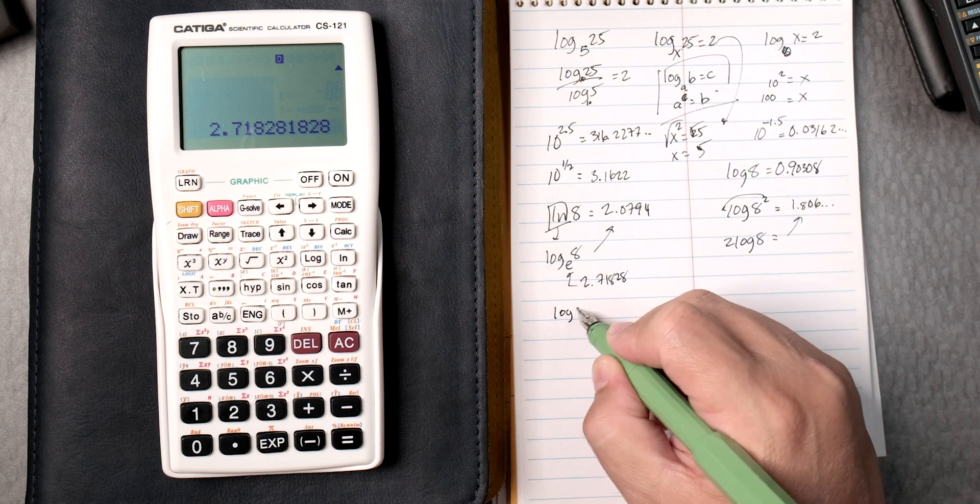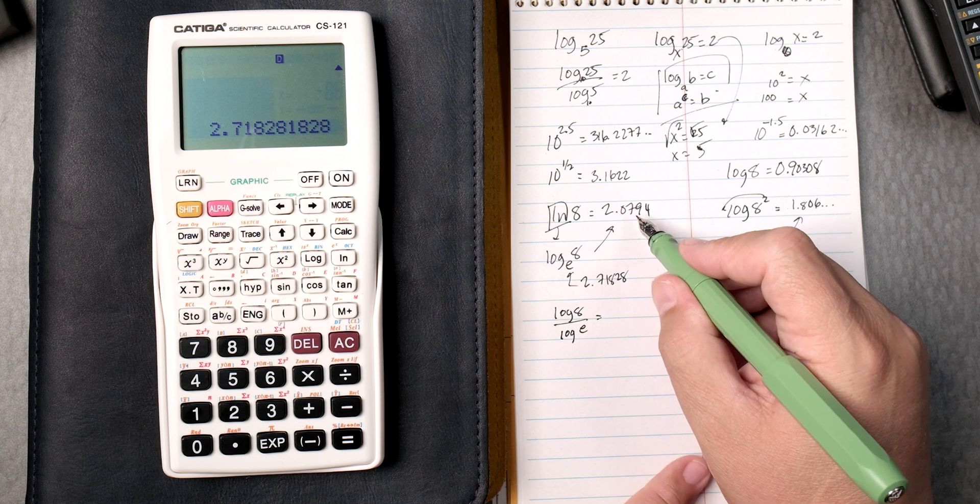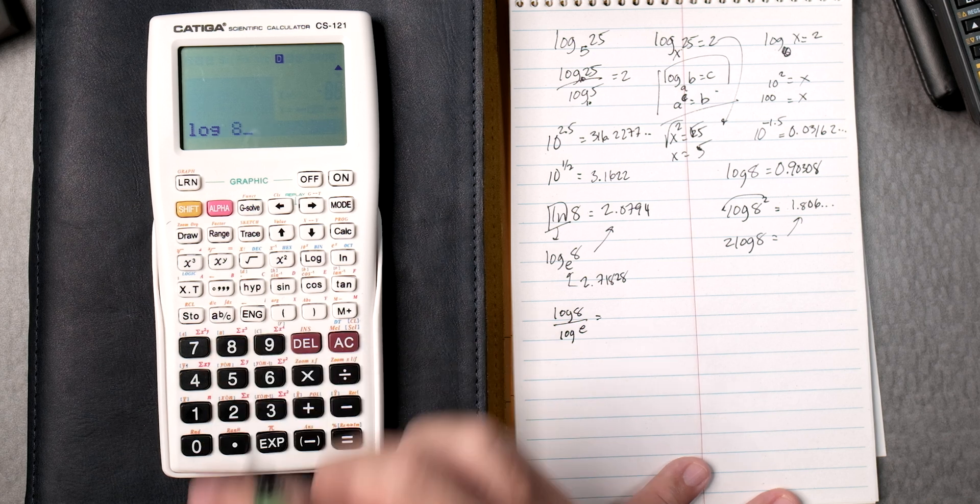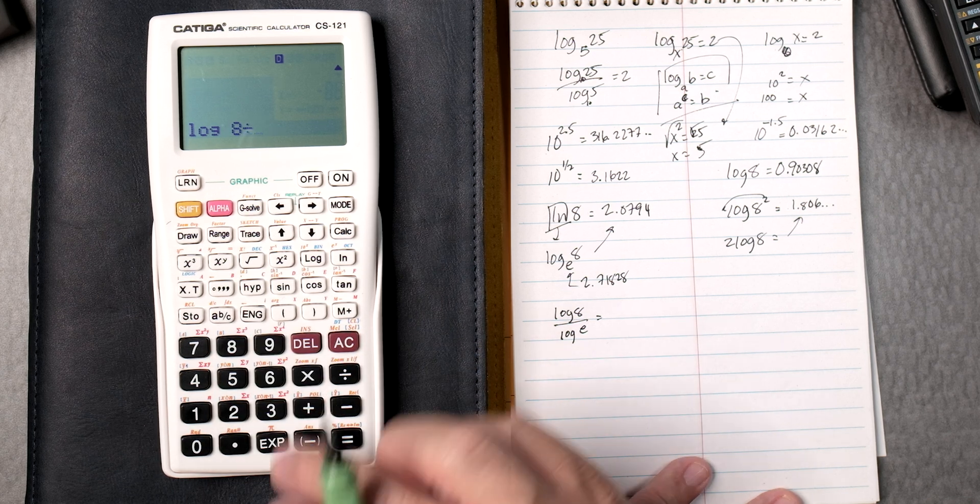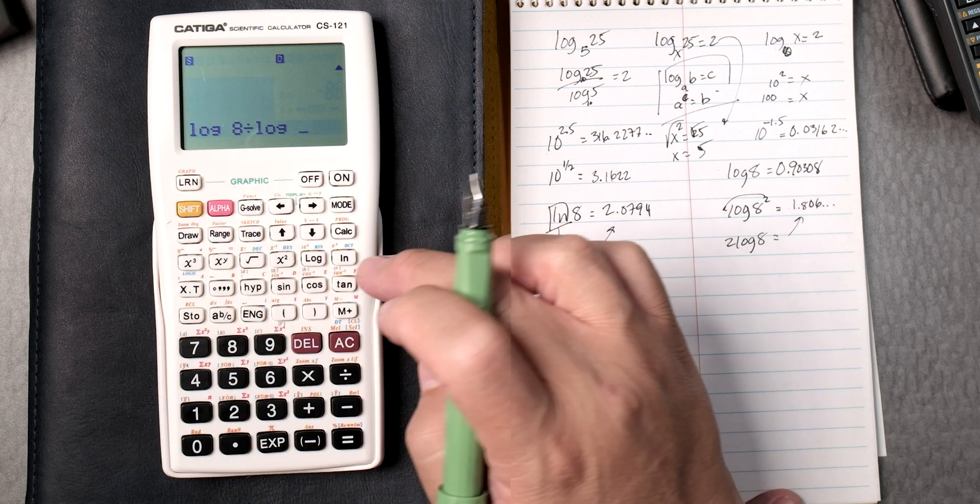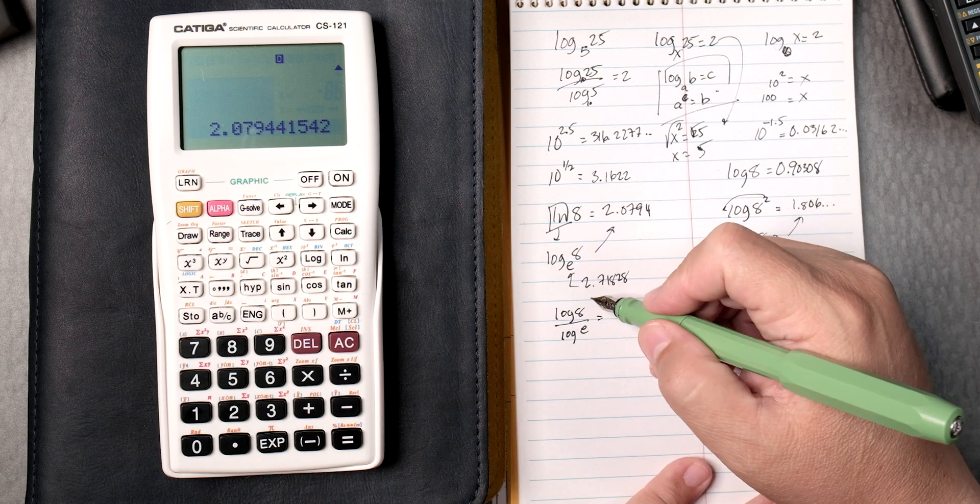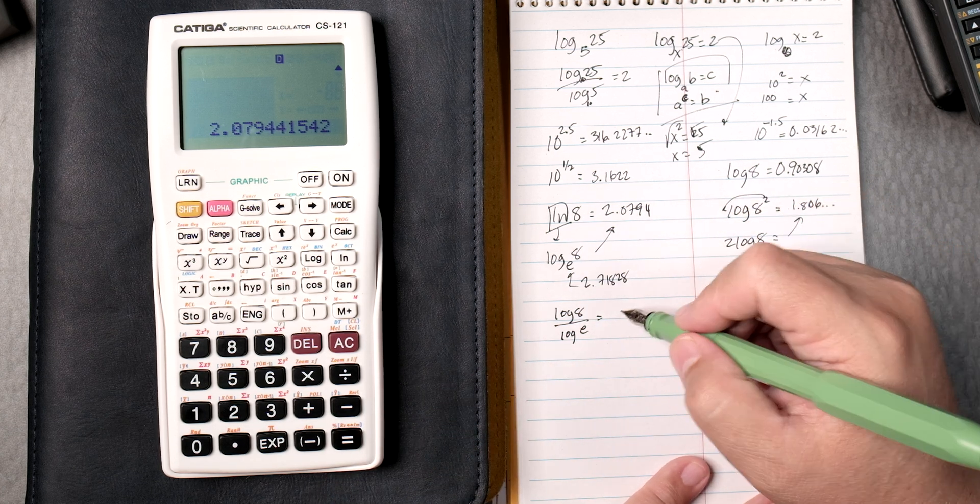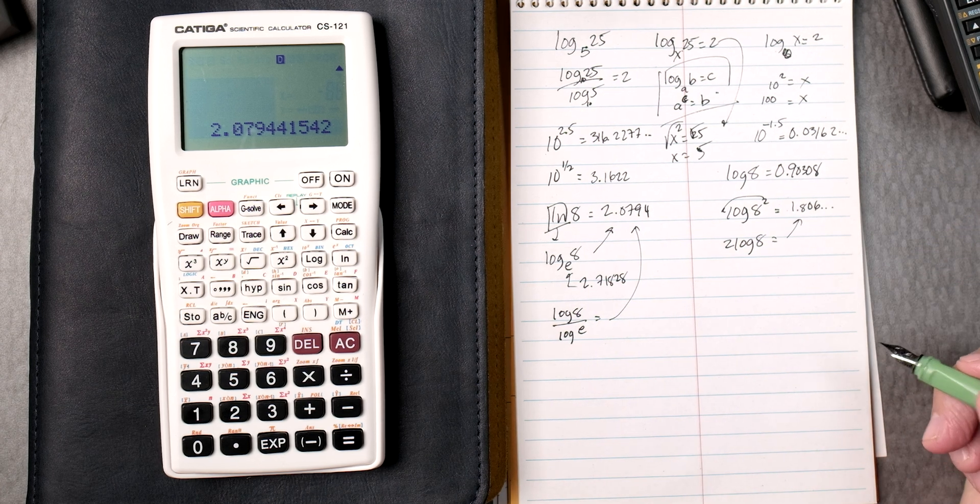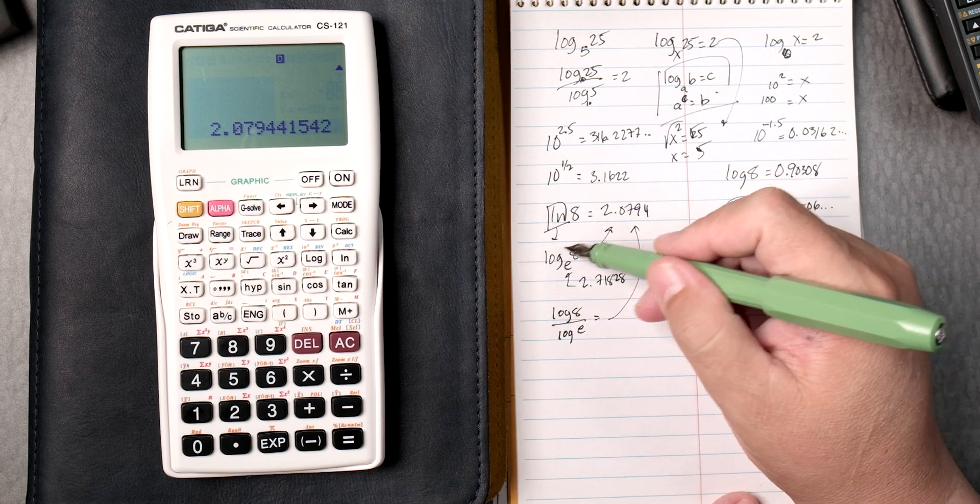Now if you remember back to this, if you say the log of 8 divided by the log of e, it should give you this answer. Let's see. Log 8 divided by log, this is going to be tricky because we're going to need shift e to the 1. Will that work? Yes, there it is right here, 2.07.